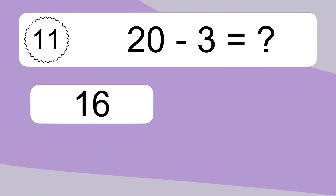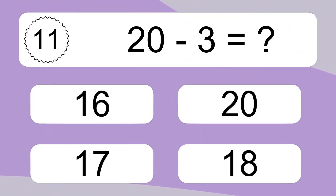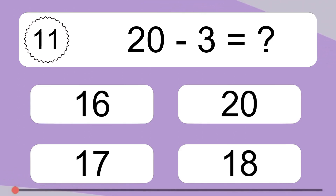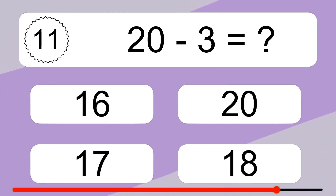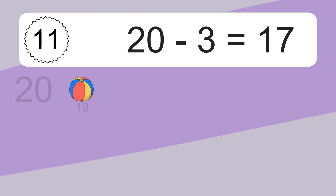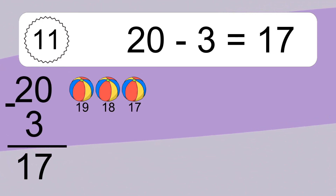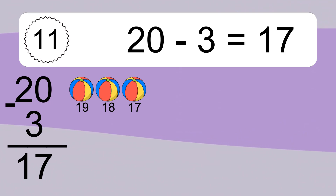20 minus 3 equals what? 20 minus 3 equals 17. Let's count it: 19, 18, 17.